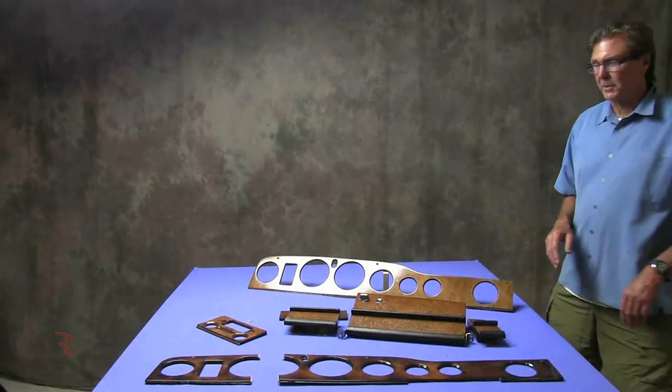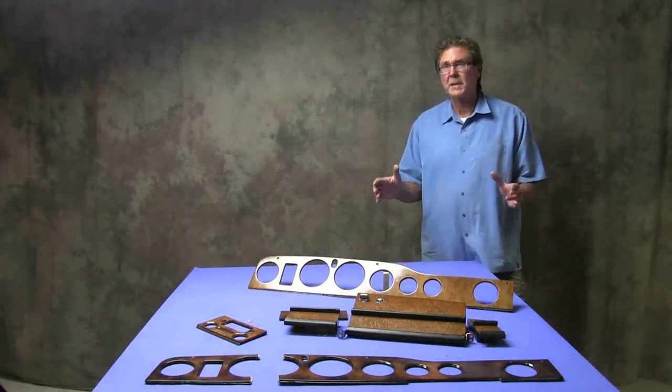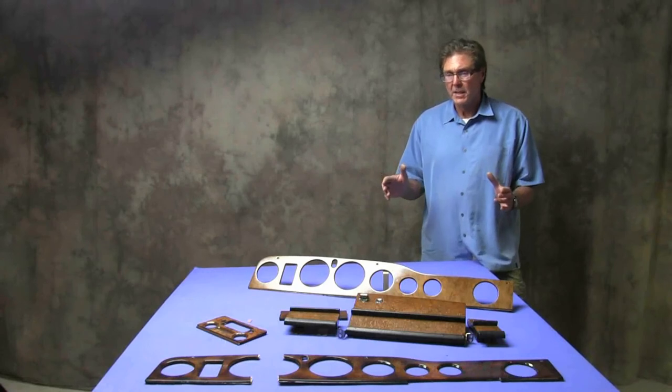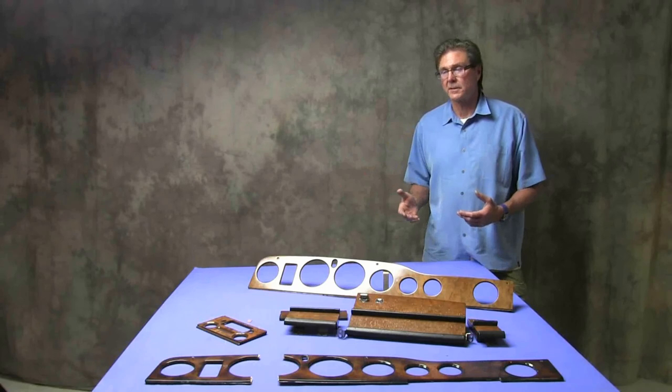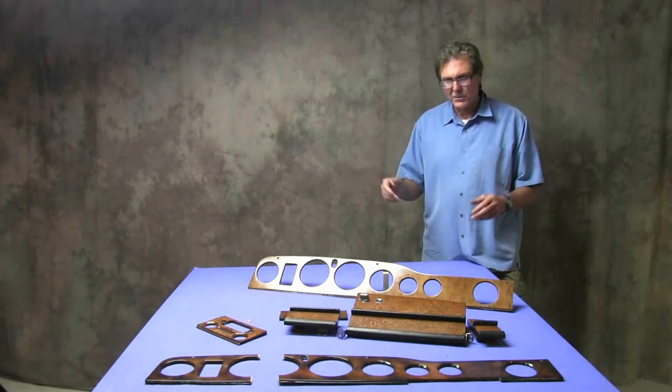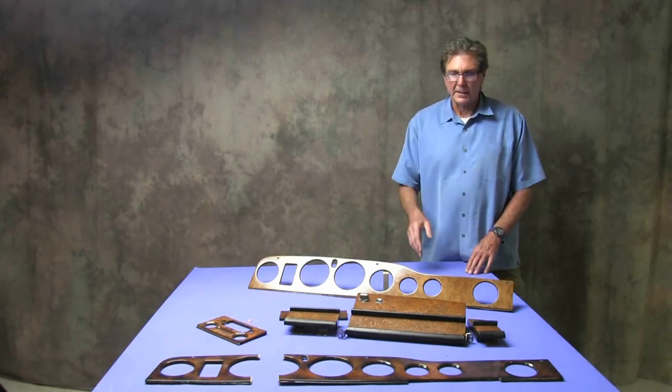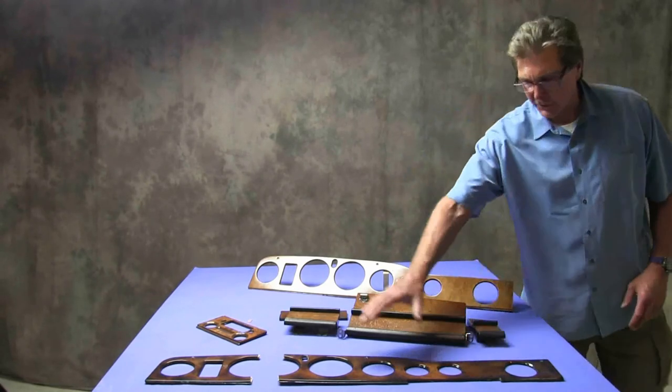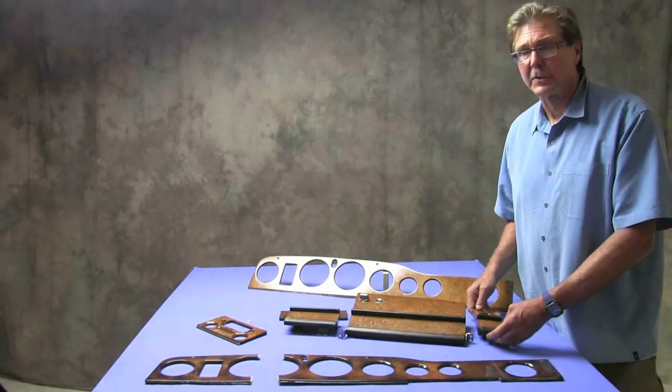So again, next time you're looking for a Rolls or Bentley, consider the wood. It should have a general family resemblance as far as color, it should have a similar gloss, it should generally look like it belongs together. Aged, chipped, that's okay - you expect that in a car with some age. So we'll be back. This dash will not be refinished, but we will refinish this and bring back and compare what it looks like after finishing.